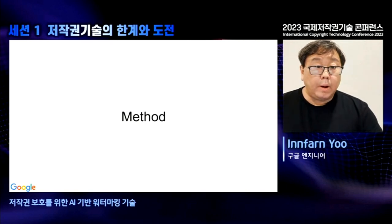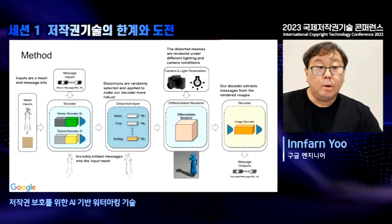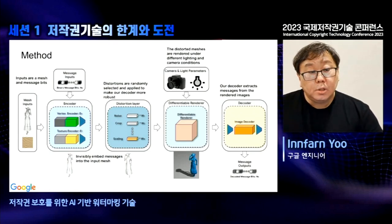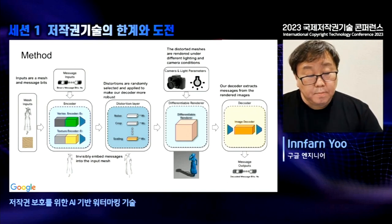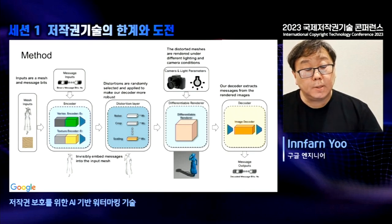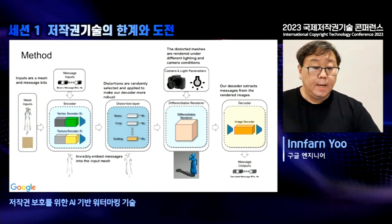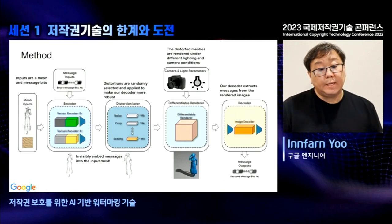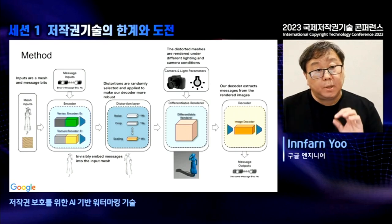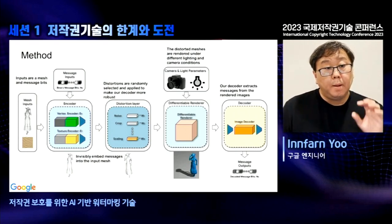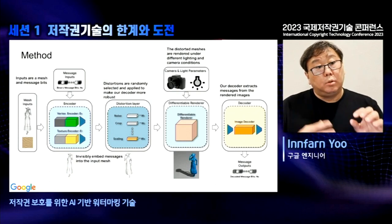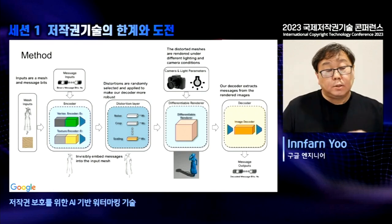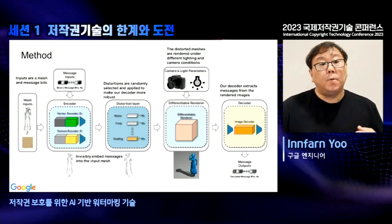Our method has two inputs: a mesh input and a message input. The mesh contains 3D information plus texture; the 3D information consists of vertices and indices. These two inputs go into our encoder, which has two sub-encoders inside: a vertex encoder and a texture encoder. The vertex encoder embeds messages into the vertices, and the texture encoder embeds the same message into the texture. After the encoder, we have a watermarked mesh.